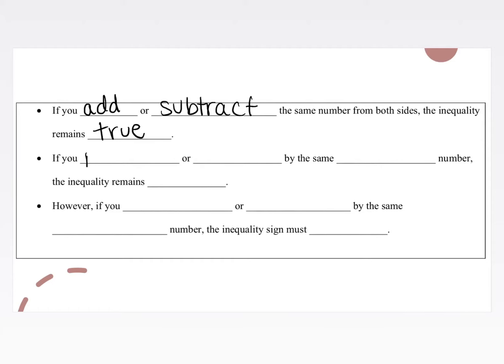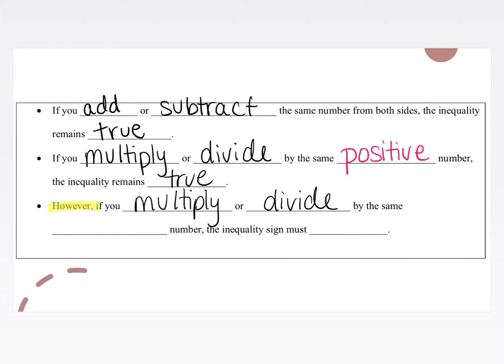If we multiply or divide by the same positive number, the inequality also remains true. However, if you either multiply or divide by the same negative number, the inequality sign must flip. This is really important, and we're going to go into some examples and see why that works.